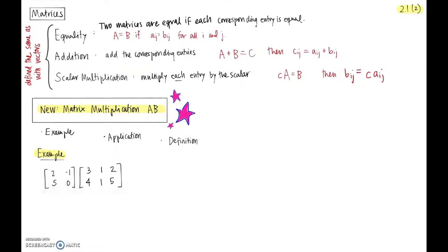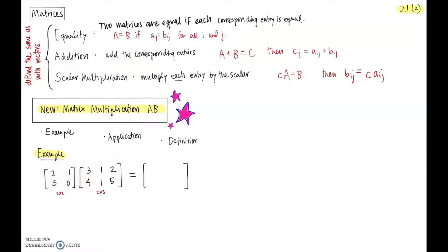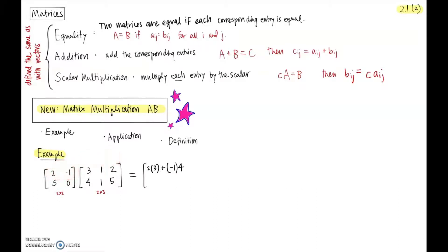Here's our first matrix multiplication: a 2 by 2 matrix multiplied by a 2 by 3 matrix, and we'll end up with a 2 by 3 matrix. To multiply, I take the first row of the first matrix and the first column of the second matrix, and compute 2 times 3 plus negative 1 times 4. For the second element in the first row: 2 times 1 plus negative 1 times 1. For the last element: 2 times 2 plus negative 1 times 5.